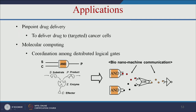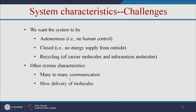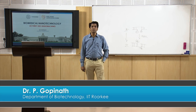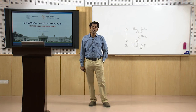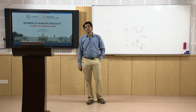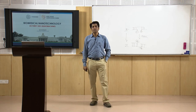The main application is pinpoint direct drug delivery — delivering the drug to targeted cancer cells very specifically: if both substrate and effector are present, then only will the product form. Still, many challenges need to be addressed: we want the system to be autonomous without human control, closed with no external energy supply, and with recycling of carrier molecules and slow, sustained delivery of drug molecules. As a summary, we have learned about DNA-based and protein-based nanomachines and nanoscale communication. This field needs a lot of research to explore the potential applications of nanomachines in various fields.